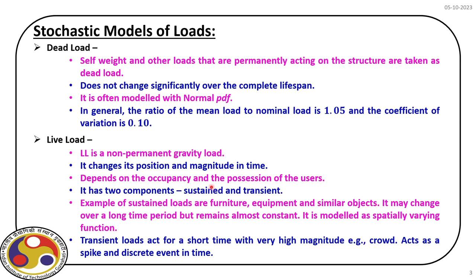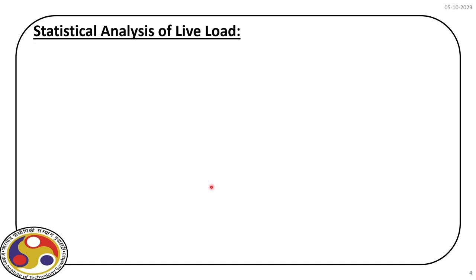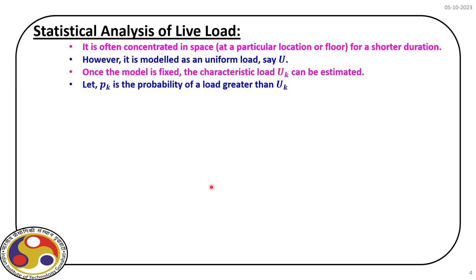The transient load acts for a shorter time duration but with a very high magnitude — for example, a crowd. If you have a theatre, at some point for a small duration the floors may be fully occupied, producing a high magnitude of transient load acting for a very short duration. The question is how we can model this particular live load.